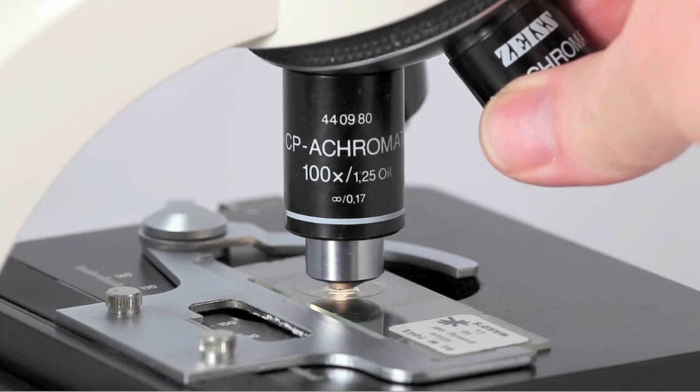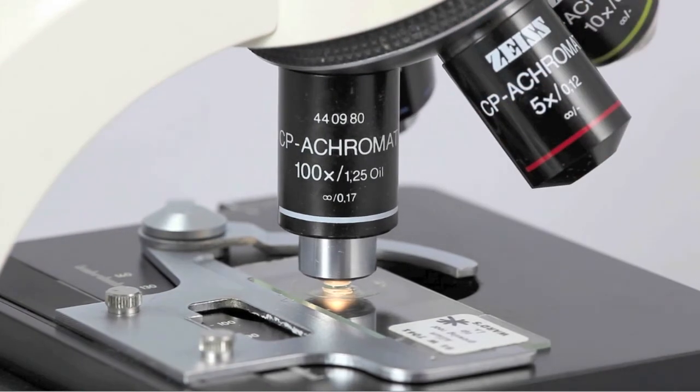Rotate the oil immersion lens into place. Now you're ready to observe very small objects, such as bacteria.